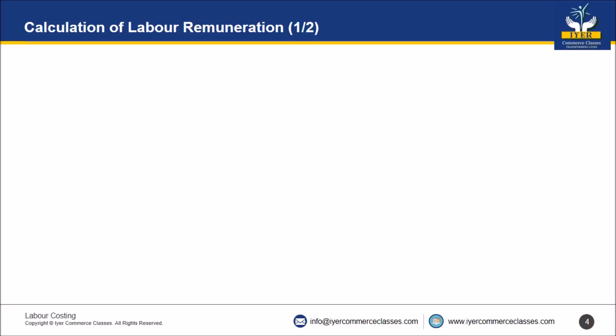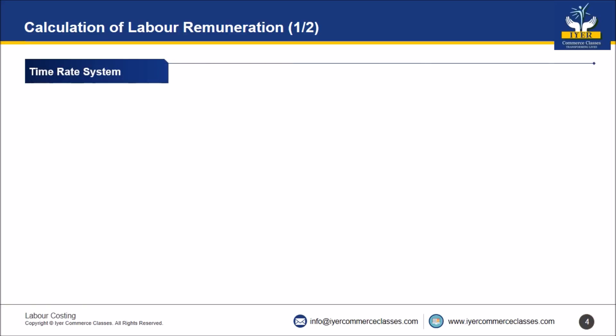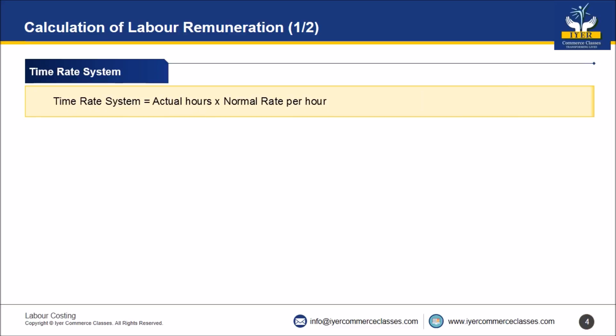Now we come to the second part of labor cost: calculation of labor remuneration. There are various methods. Number one is the time rate system, where wages are paid on the basis of number of hours worked. Formula: actual hours multiplied by the normal rate per hour.